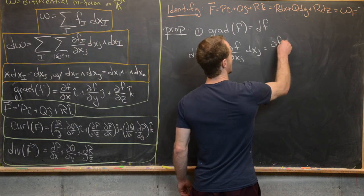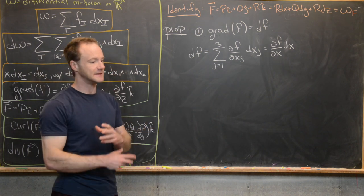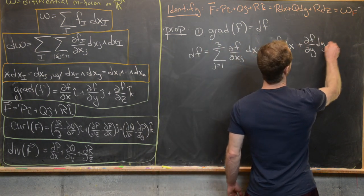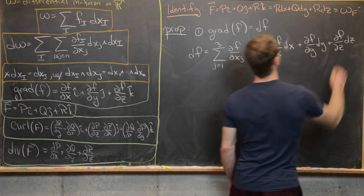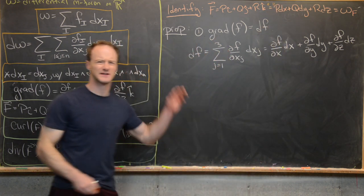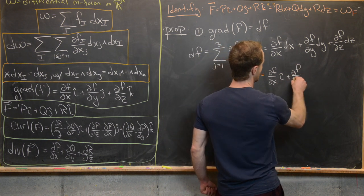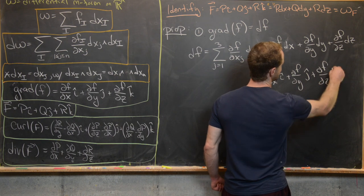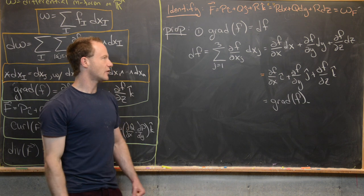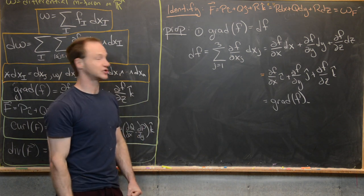This is clearly ∂f/∂x dx + ∂f/∂y dy + ∂f/∂z dz, using x₁ = x, x₂ = y, x₃ = z. By our identification, this equals ∂f/∂x î + ∂f/∂y ĵ + ∂f/∂z k̂, which is exactly the gradient of f. The exterior derivative of a zero-form looks exactly like the gradient of a function of more than one variable.